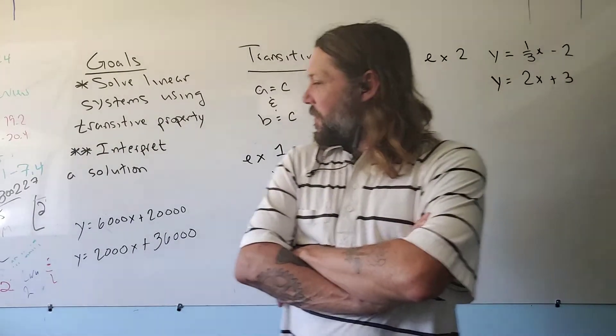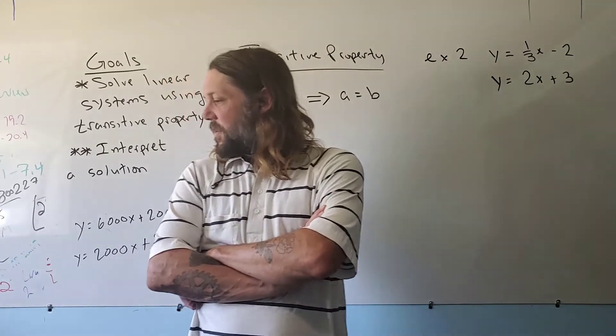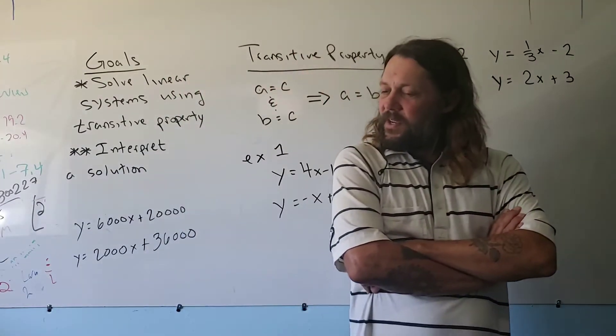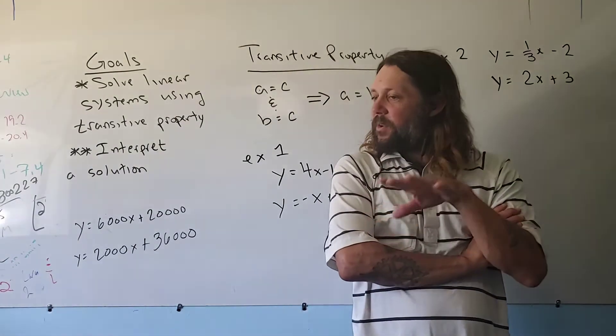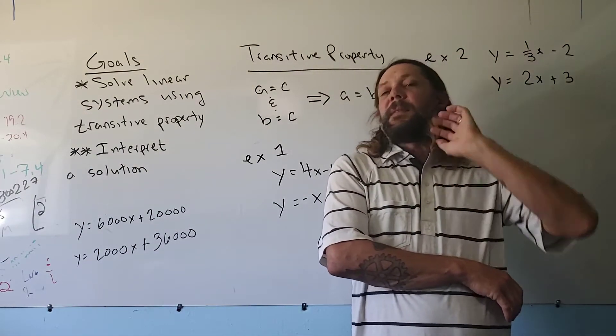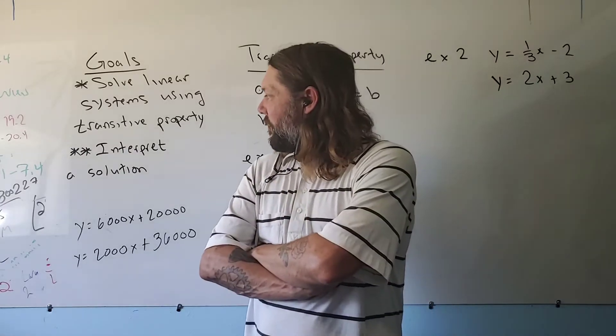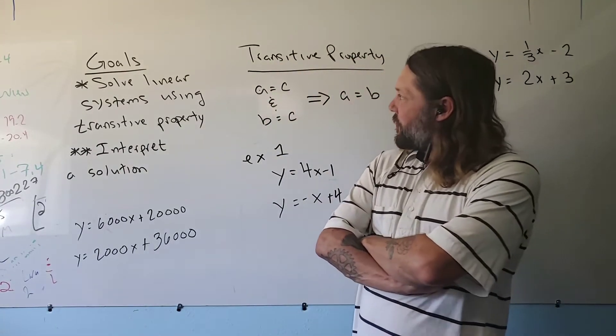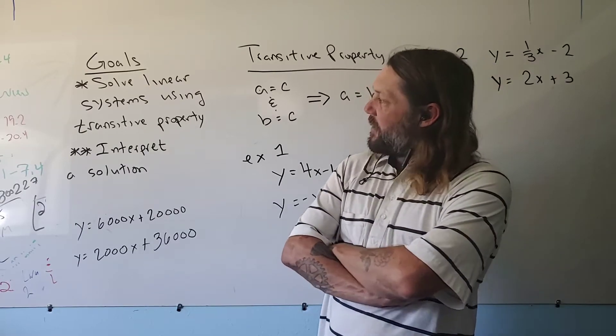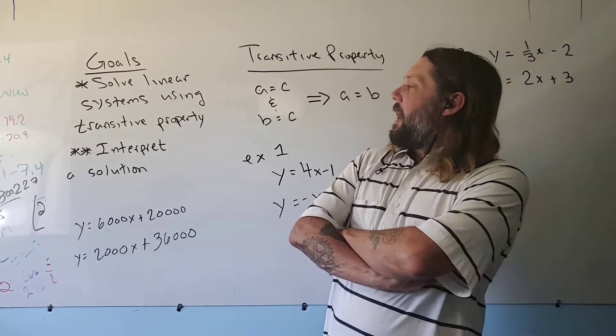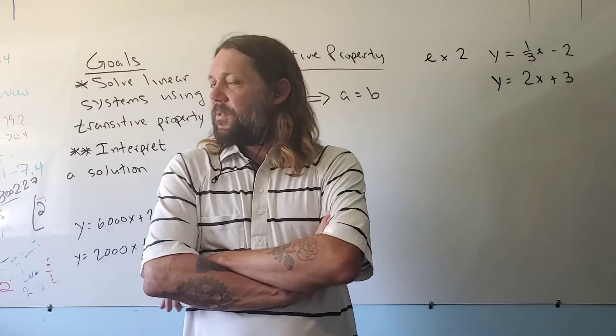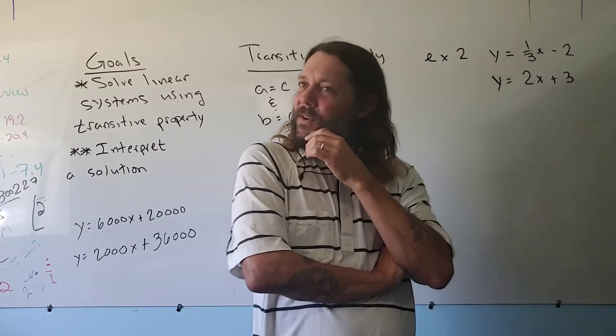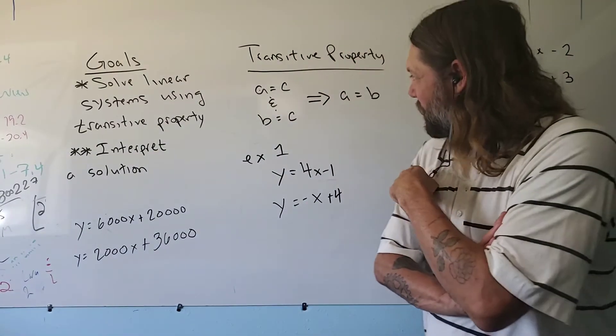So anyways, today's lesson is on 7.2, lesson three. This section wasn't in the book, but I felt that in what we're covering, this would be a good thing to see. Let me just go over our goals. It's a pretty simple lesson. We have two goals today. Our first goal is to solve a linear system using transitive property. And then our second goal is going to be to interpret the solution. Let's keep this nice, short, and simple.